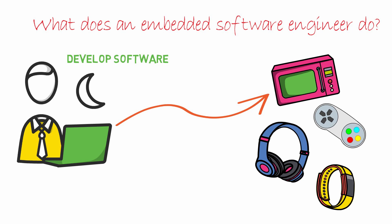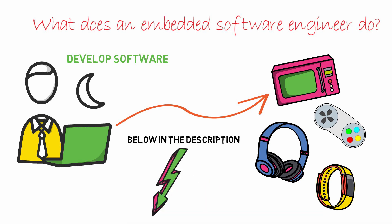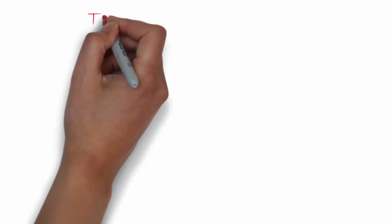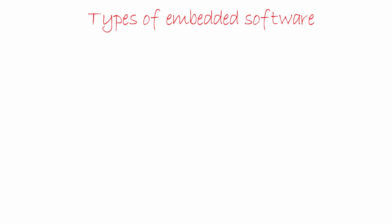Let's get into a little more detail so we get an understanding of what it is to be an embedded software engineer. We have made a separate video on what embedded systems are, how they differ from regular computers, and what the different types are — the link is in the description. Now let's have a look at some types of software that are considered embedded.